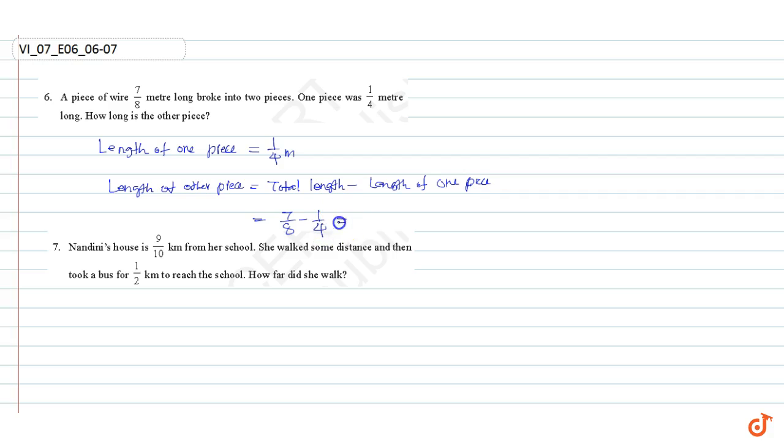Taking LCM as eight, we get seven by eight minus two by eight, which is equal to seven minus two divided by eight, which is equal to five by eight meter.